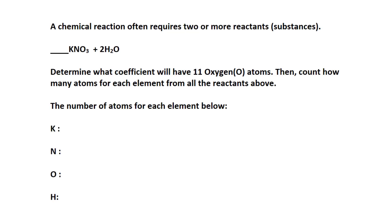We learned that a chemical reaction occurs between two or more substances called reactants. In this lesson, we are going to focus on determining the coefficient for a particular reactant based on how many of the atoms for particular elements that we need to have in those reactants. Let's look at this example.